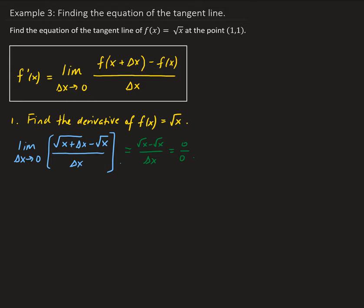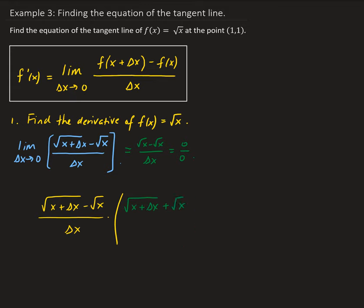So first let's simplify this expression. We have square root of x plus delta x minus square root of x, all divided by delta x. We're going to multiply it by its conjugate, which is square root of x plus delta x plus square root of x, and we divide by the same expression — otherwise we'd be changing the problem.